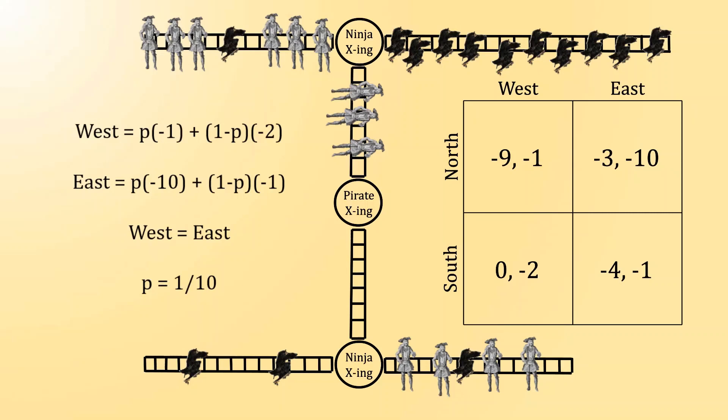In other words, if the pirate goes north 10% of the time, and south 90% of the time, then the ninja is equally well off regardless of whether he chooses to go west or east. This answer matches the earlier expectation, but it is not for the reason that we previously described.